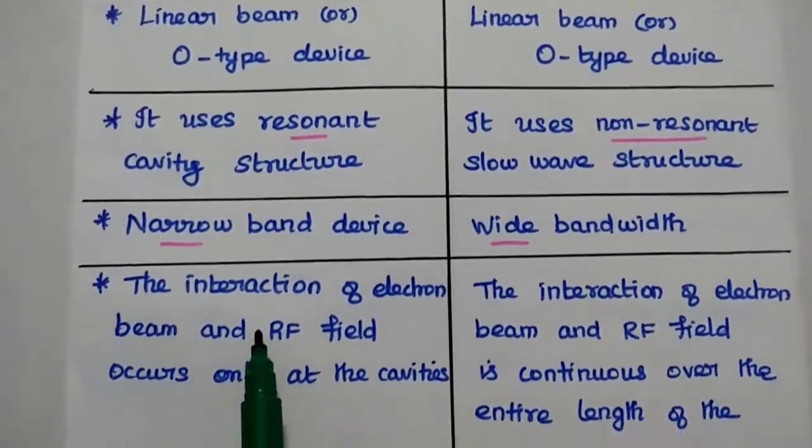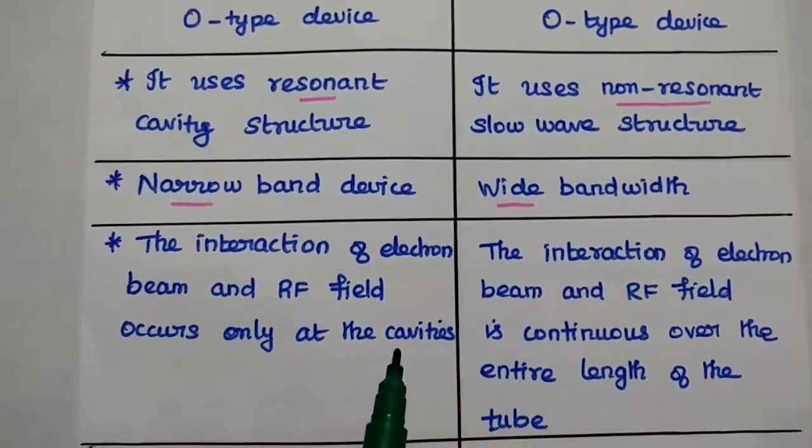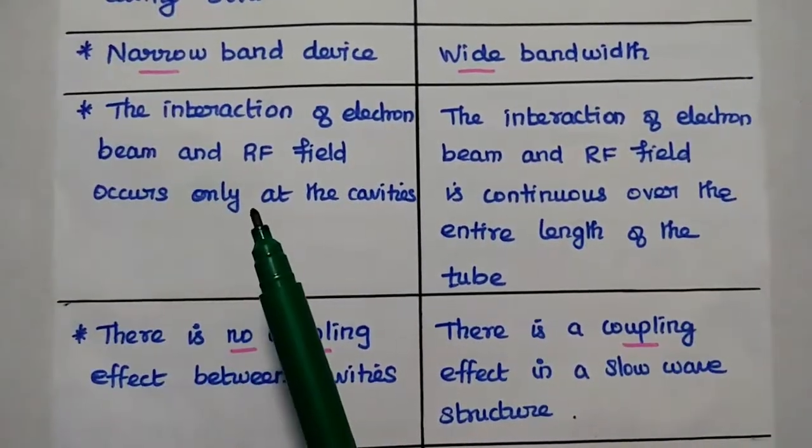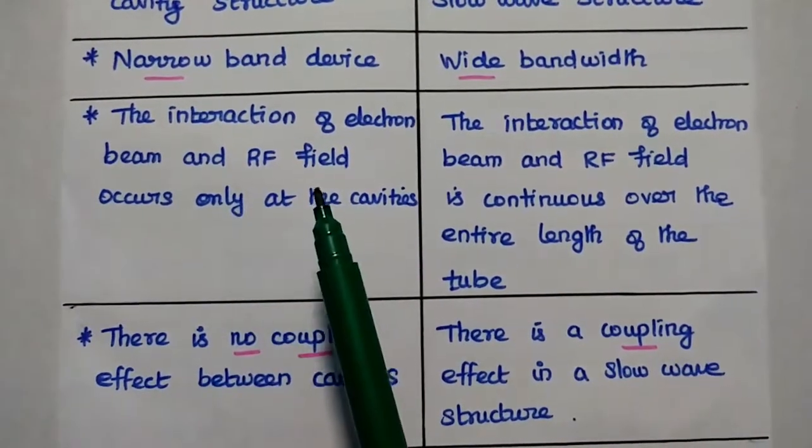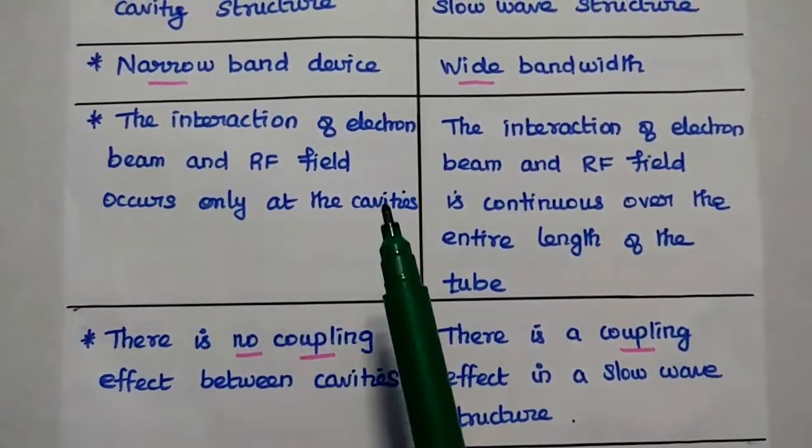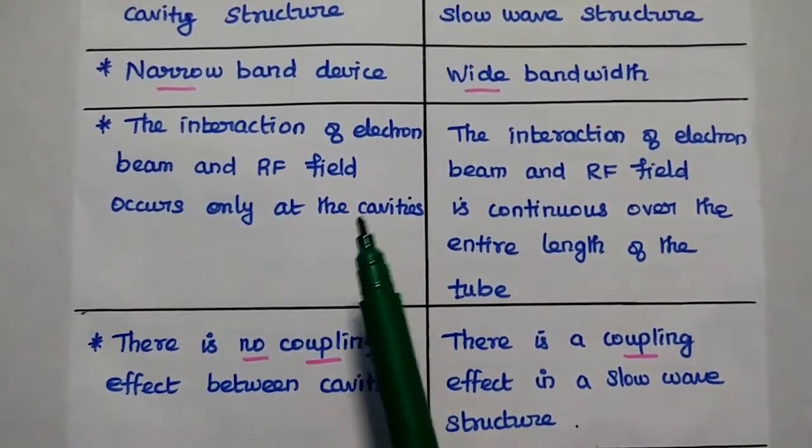Klystron amplifier is a narrow band device. TWTA is a wide bandwidth device. In this klystron amplifier, the interaction of electron beam and the RF field occurs only at the cavities. There is no continuous interaction.